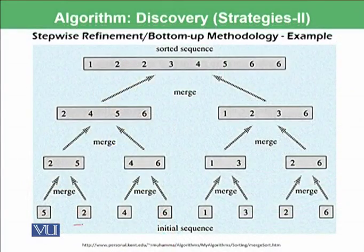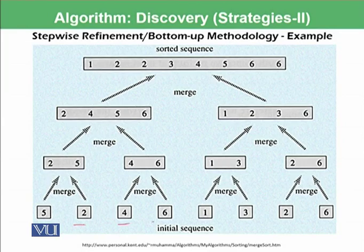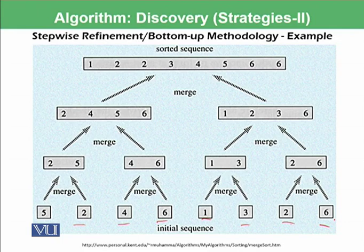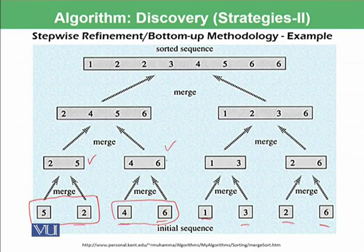Here is an example. You are given a list: 5, 2, 4, 6, 1, 3, 2, 6, which needs to be sorted. At the first step, you rearrange pairs of two numbers. For example, 5 and 2 are rearranged to form 2, 5. Then 4 and 6 are rearranged. 1 and 3 are already arranged, and 2 and 6 are already arranged. So you have solved from the bottom to form the top.